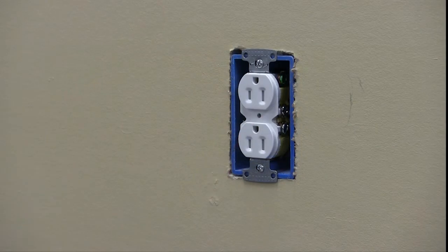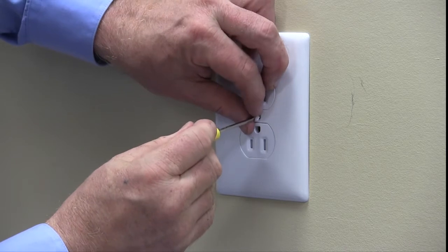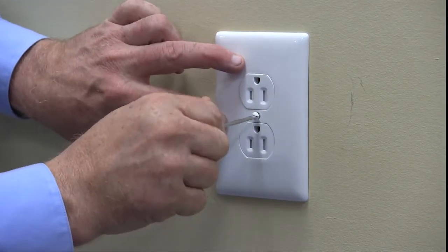Fold the wires, push them into the box, and mount the receptacle. Finish the outlet by fastening a wall plate.